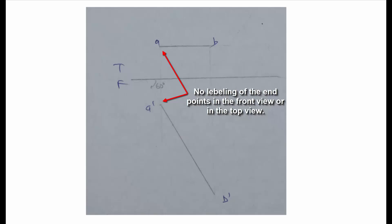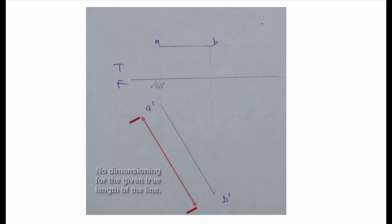In this drawing no labeling of the endpoints in the front view or the top view as you can see a b and a prime b prime. No labeling of the reference line x y. Also, no dimensioning for the given true length of the line was done.